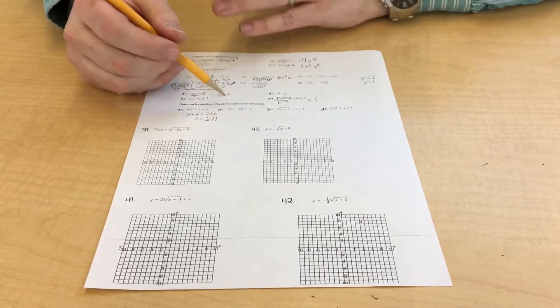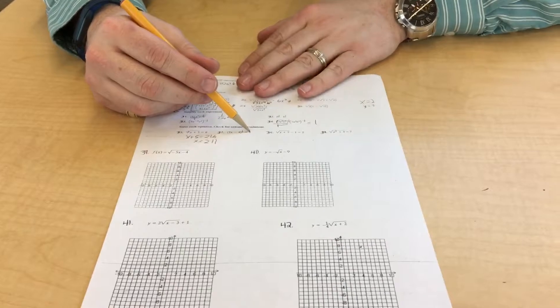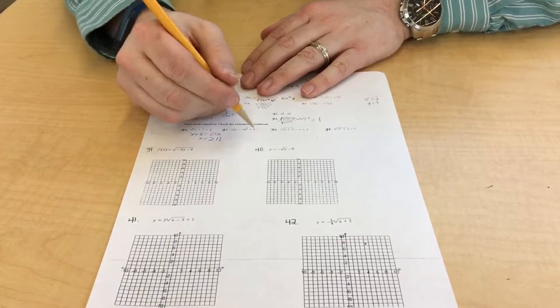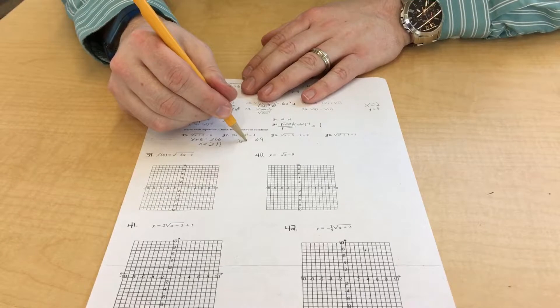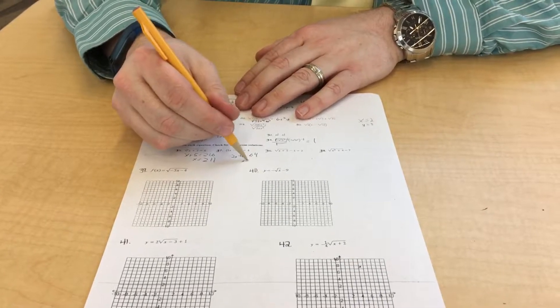On this one, it's the 1/3 power. It's cube root. So you're going to cube 4. That's going to be 64. And that's 2x minus 4 equals 64. So x is 30.